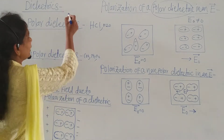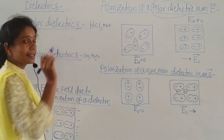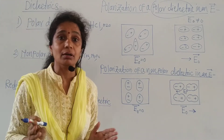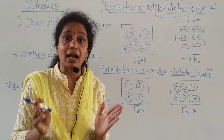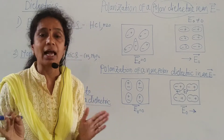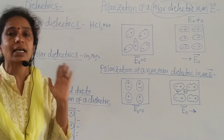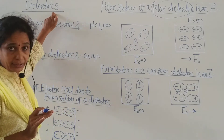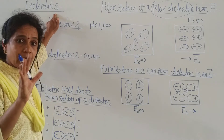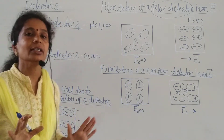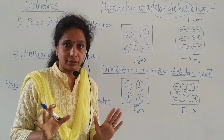What are the examples of dielectrics? Examples of dielectrics are mica, rubber, wood, and glass. All these are the examples of dielectrics. The dielectrics are non-conducting substances.